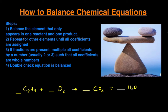We're going to work through these examples with these steps. The first step is to balance the element that only appears in one reactant and one product. Looking at this example, carbon only appears in one reactant and one product. Hydrogen would also work. Oxygen would not be a good starting point because it appears in multiple products. So let's start with carbon.